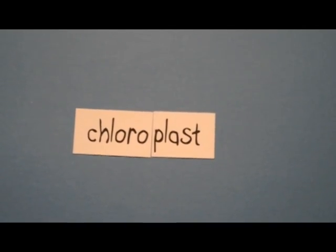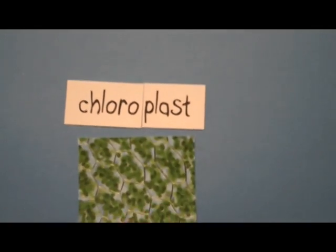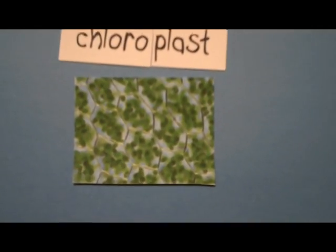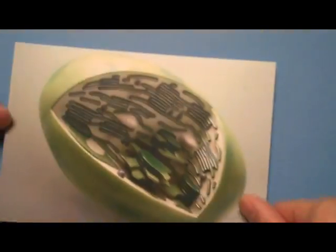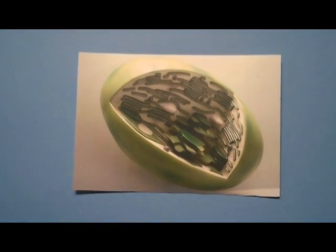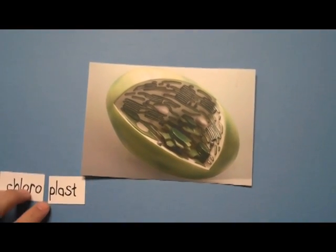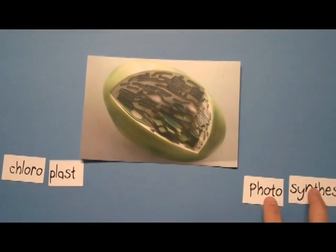And if we looked at these cells with a microscope, they would look like this. And if we look closer at a single chloroplast, it would look like this. This is where it all takes place — the chloroplast is the site of photosynthesis.